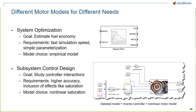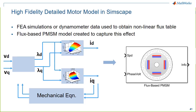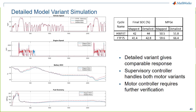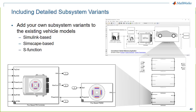To capture nonlinear saturation effects, you can obtain nonlinear relationships between flux and current from FEA simulation or dynamometer data and put them into a flux-based PMSM model. In 17B we introduced this flux-based PMSM model directly into Powertrain Blockset. Regardless of where you get your higher-fidelity motor models — Simulink subsystem variants, Simscape, or an S-function — Powertrain Blockset provides a way to validate those components.